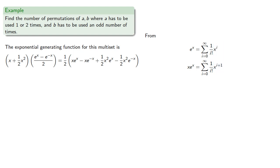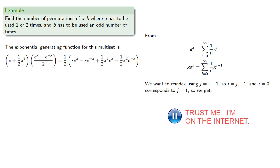And so we want to re-index using j equals i plus 1, so i equals j minus 1, and i equals 0 corresponds to j equals 1. And so re-writing our series gives us the new form.